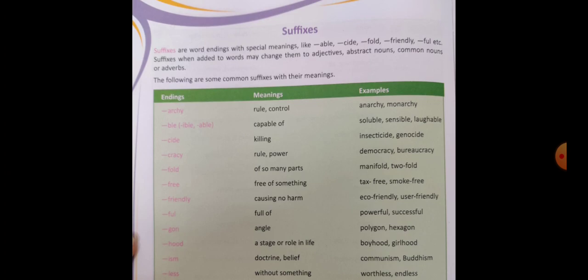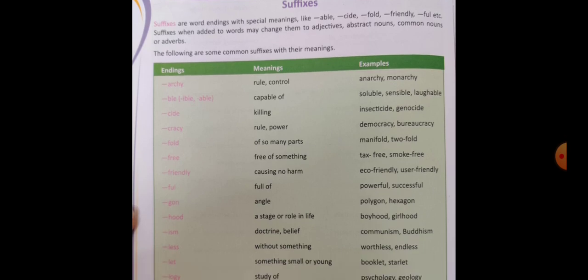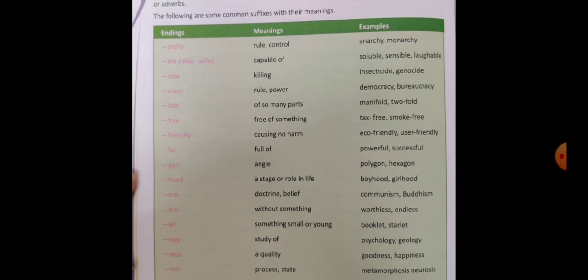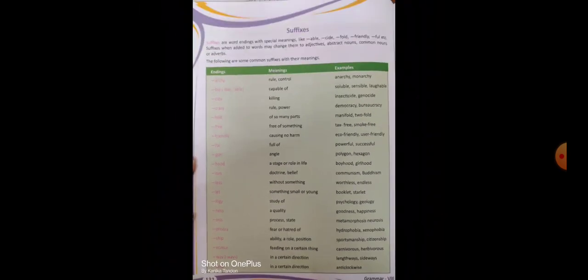For example, '-able' or '-ible' — both can be suffixes meaning 'capable of': solable, sensible, laughable. Note that 'unable' is actually a prefix example, not a suffix. Then 'fold' meaning many parts — manyfold, twofold. 'Friendly' means causes no harm — eco-friendly, user-friendly, etc. 'Hood' refers to the stage of life — brotherhood, sisterhood, motherhood, fatherhood. These are the examples you can read by yourself to understand suffixes and prefixes.